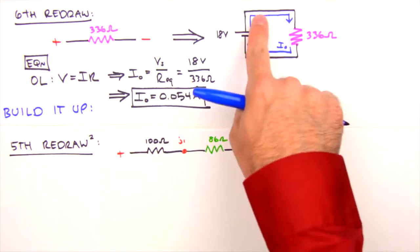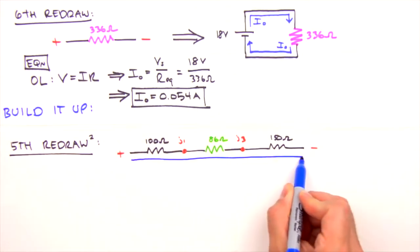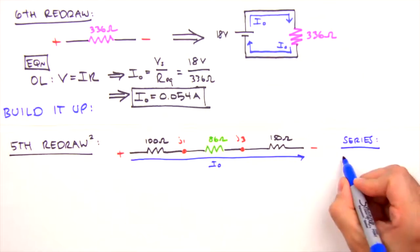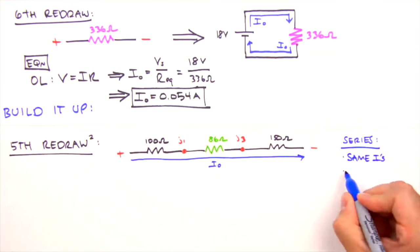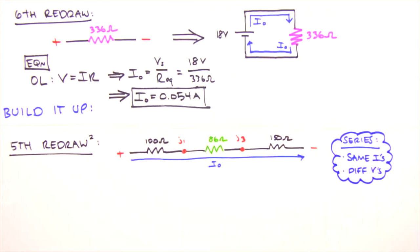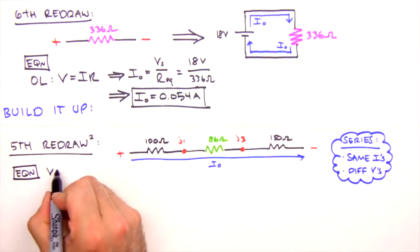Okay, we know that I0 passes through the resistor representing the equivalent resistance of these three resistors. And since there's only one path for the current, we know that I0 must pass through each of the three resistors. In other words, series resistors experience the same current, but provided their resistance values differ, they experience different voltages. Knowing the current through the resistors, we can now determine the voltage across them using Ohm's law.